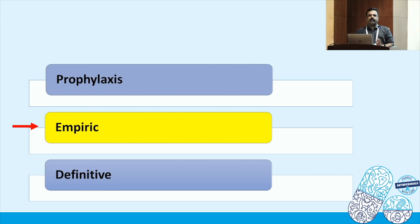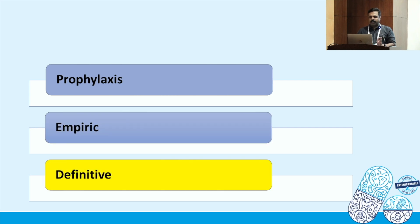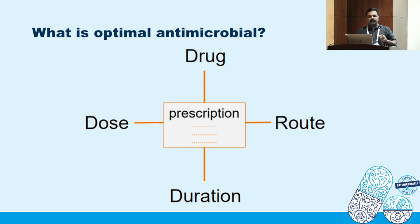Empiric antibiotic use depends on the site of infection, the antibiogram in your unit, and whether the patient has a community-acquired infection or is already in hospital on antibiotics developing a secondary infection — so you should have an empiric line of drugs ready. For definitive treatment based on culture and sensitivity, even if you start the patient on a broader spectrum antibiotic, after getting the report you can narrow down or sometimes escalate the spectrum.